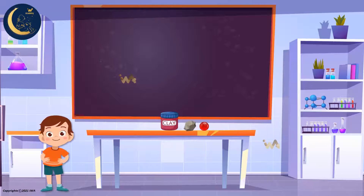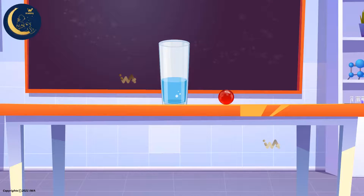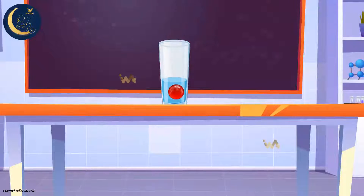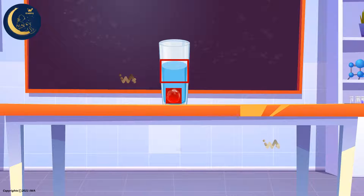Here we have a variety of materials: a glass ball, a rock, and some clay. I will prepare an empty cup and fill it with water. Now look at what I'm going to do — I will place this small glass ball here. Notice, the water level inside the cup rose. So we can infer that the glass ball displaced some of the water.